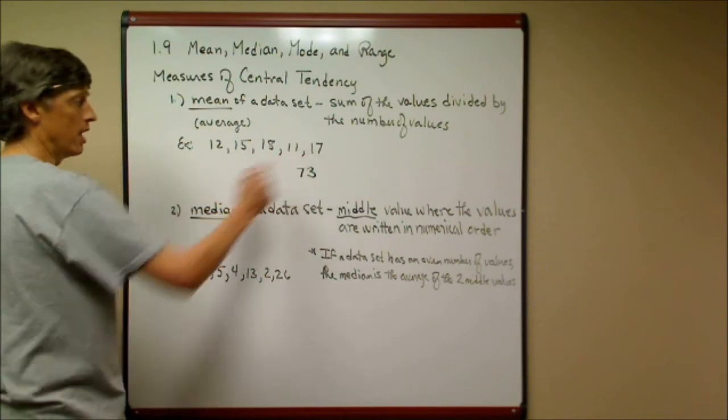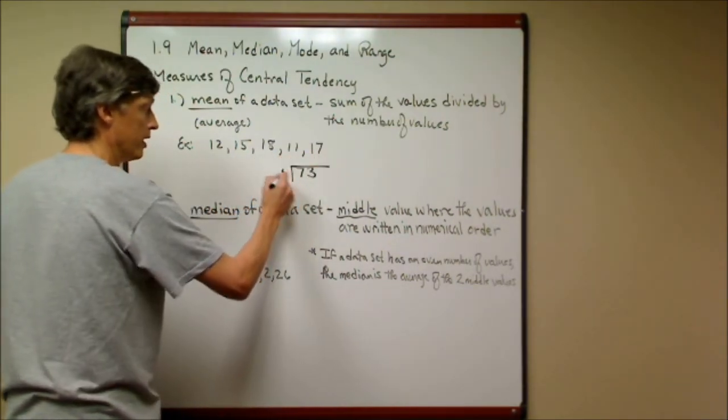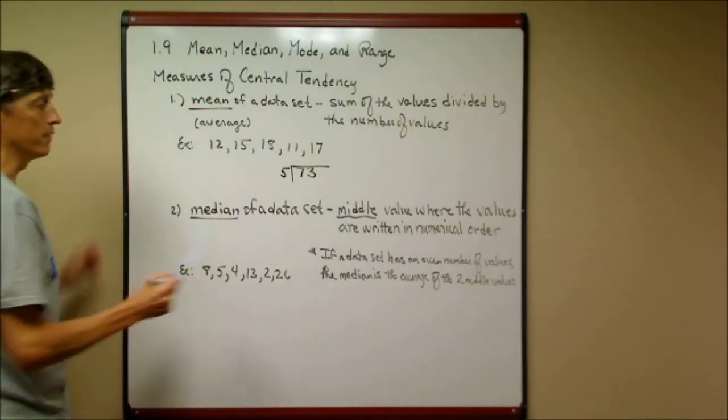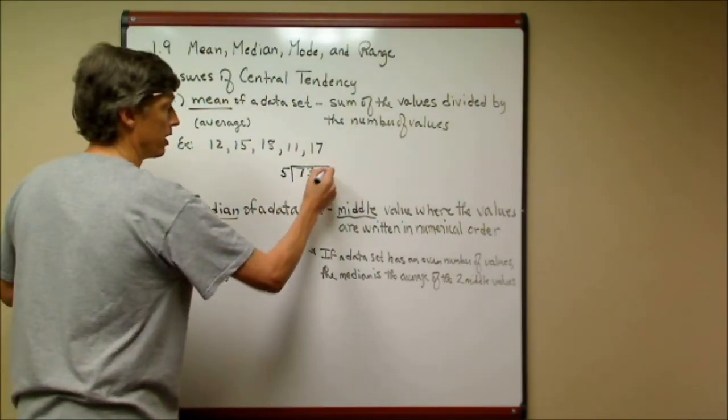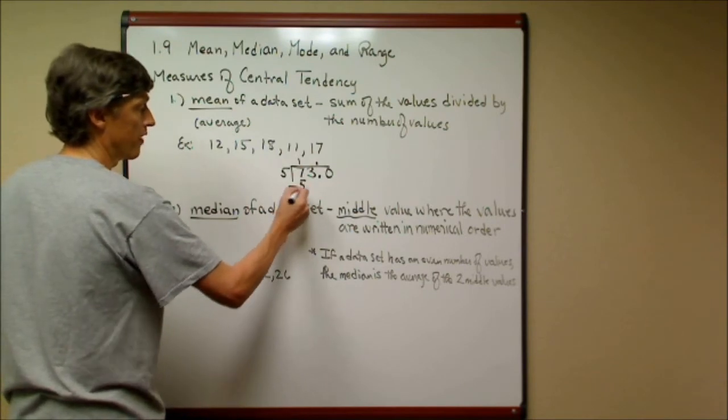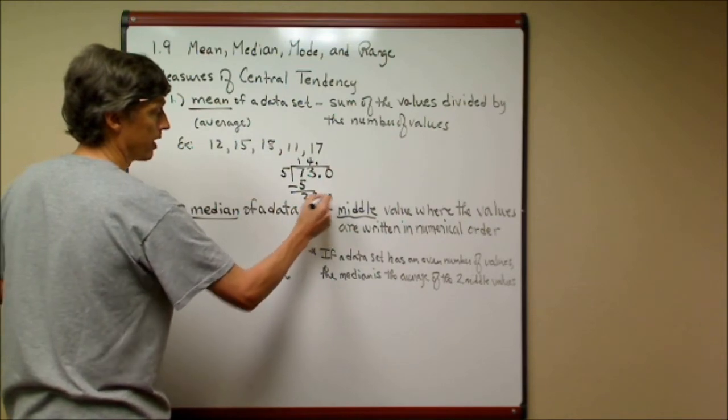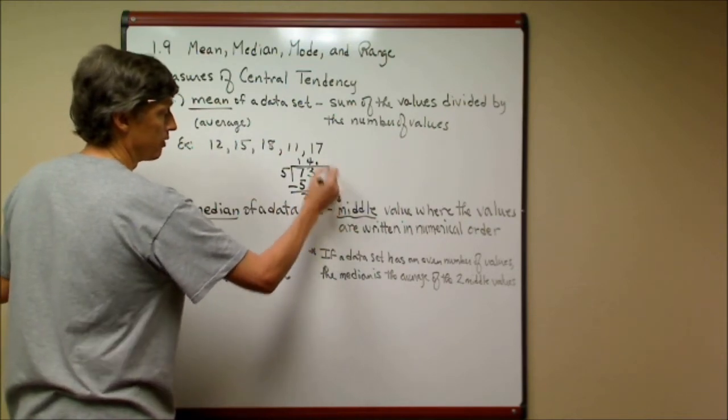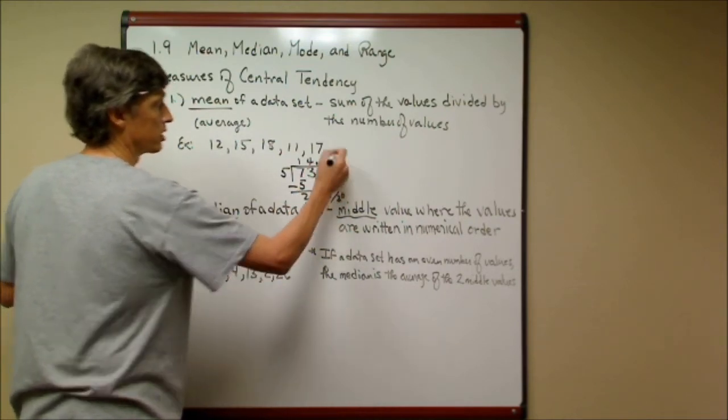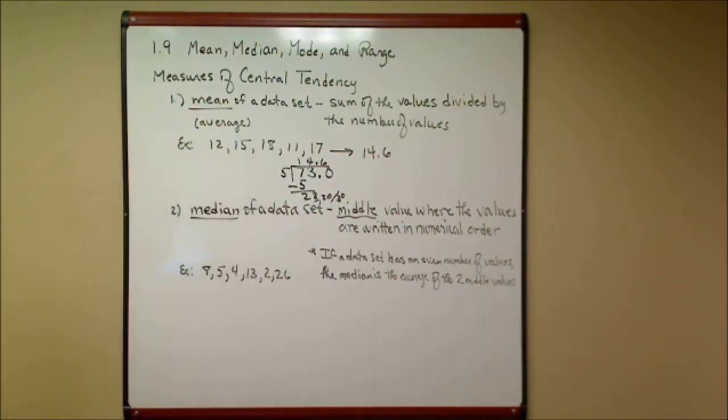I then take this sum, and I divide it by how many values there are. There are five. Now, you can see that this is not going to come out evenly, so I'm going to go ahead and add a decimal point and a zero, bring the decimal point up. It goes in once, that's 5, 23. It goes in four times, that's 20. I'm running out of space, that's 3, bring down the zero, goes in 6. So the mean or the average is 14.6. It doesn't always have to come out to be an integer.